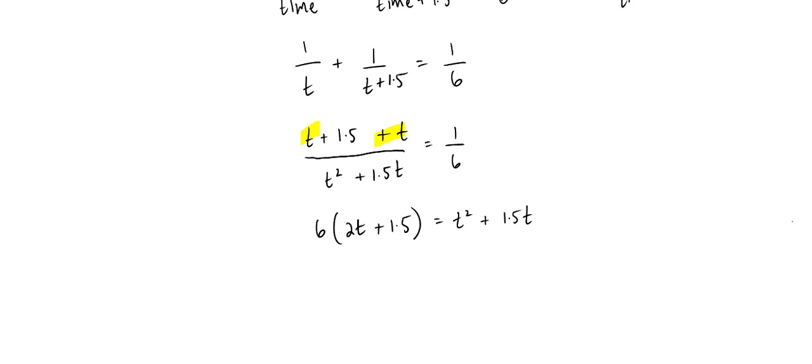6 times 2T, combining those two T's, plus 1.5 equals T squared plus 1.5T. We'll expand this. 12T plus 6 times 1.5, that equals 9, equals T squared plus 1.5T.